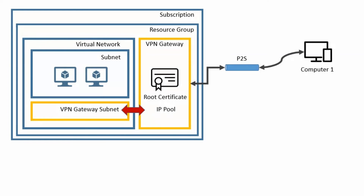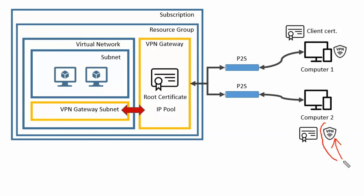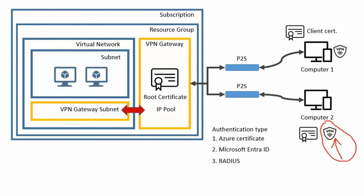On Computer1, a VPN client is installed and a client certificate is used for authentication. We are planning to connect Computer2 with the same point-to-site VPN connectivity. As given in the question, the VPN client is already installed on Computer2. Since we are using a self-signed certificate — in other words, Azure certificate — the root certificate is installed on the VPN gateway and the client certificate is installed on Computer1. The same client certificate can be used with other computers to establish a connection with the VPN gateway. Therefore, we export the client certificate from Computer1 and install it on Computer2, so Computer2 can connect to the virtual network using the client certificate for authentication.